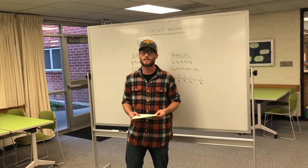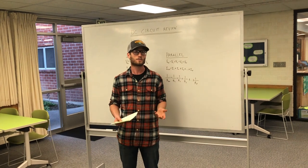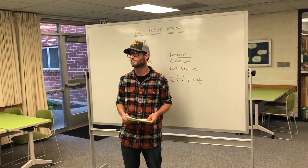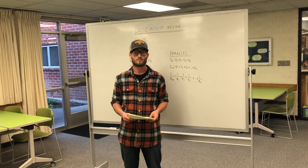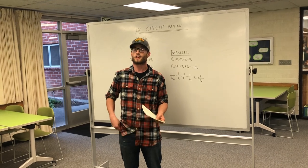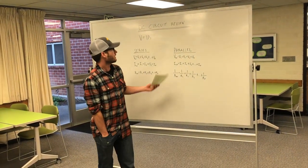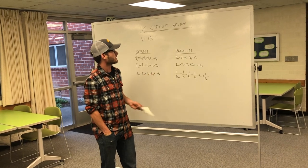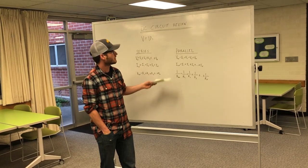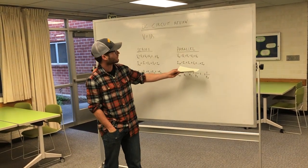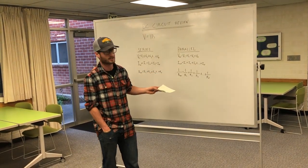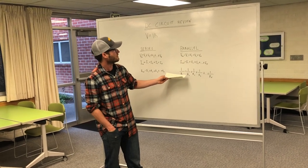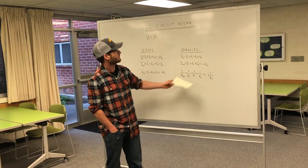Can anyone tell me how Ohm's law behaves in a parallel circuit? In a parallel circuit, the voltage across all the different voltage drops will be the same. The current will split up across all the different ones based on the resistance, and the resistance will be the inverse of all the resistance added up.